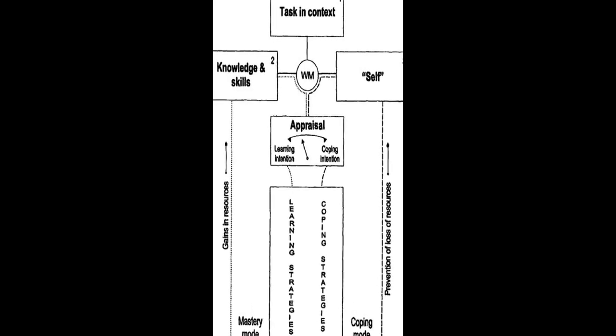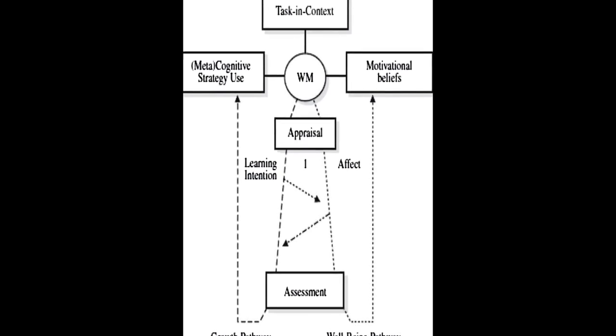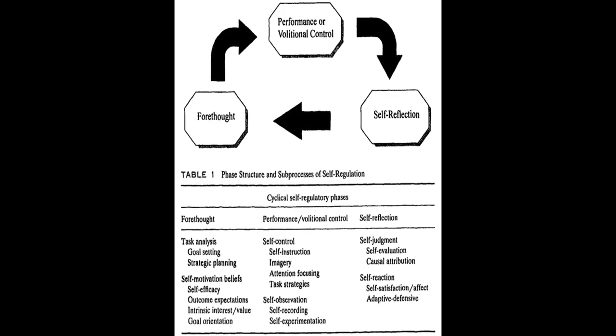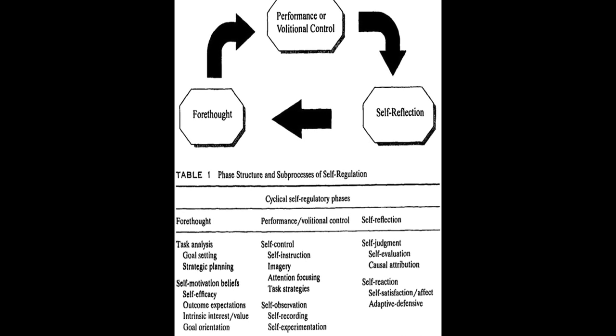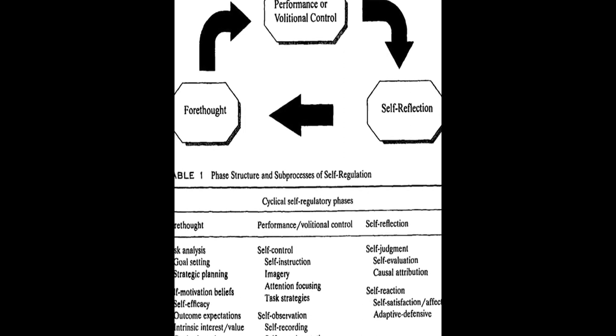Six models of SRL are analyzed and compared in this paper: Zimmerman, Bocarts, Winn and Hadwin, Pintrich, F. Clydes and Hadwin, Jarvella, and Miller. Each model is explored in detail, including its history and development, description, empirical support, and instruments constructed based on the model.